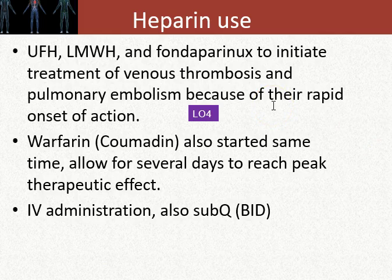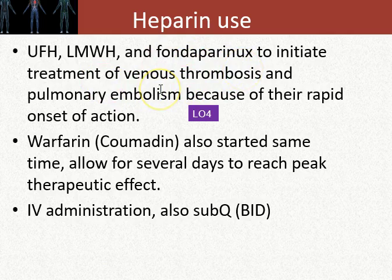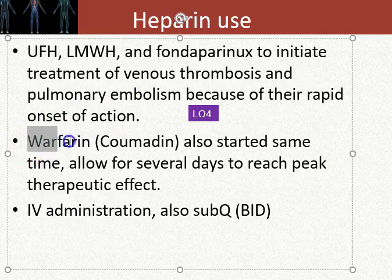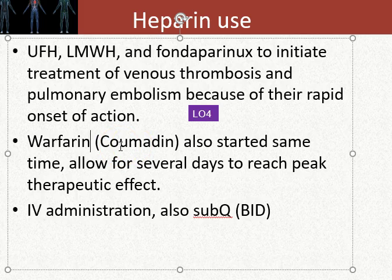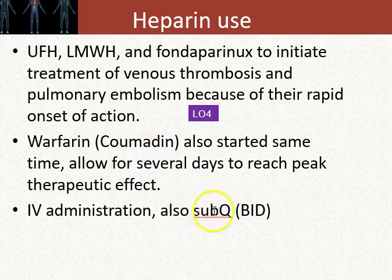Heparin — unfractionated, low molecular weight, and fondaparinux — is used to initiate treatment of venous thromboses and pulmonary embolisms because these drugs work quickly. Heparin is also used before warfarin: you never start warfarin, an oral tablet, without having heparin on board first. We'll discuss that process and why it's necessary later in this presentation. Heparins are typically given IV but can also be given subcutaneously.